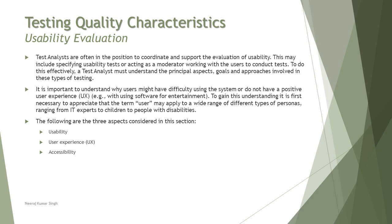Usability evaluation targets three aspects: first, usability itself; second, user experience; and third, accessibility. We are going to talk about all of them one after the other.